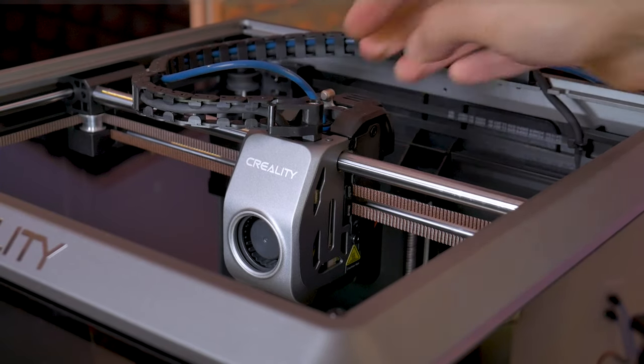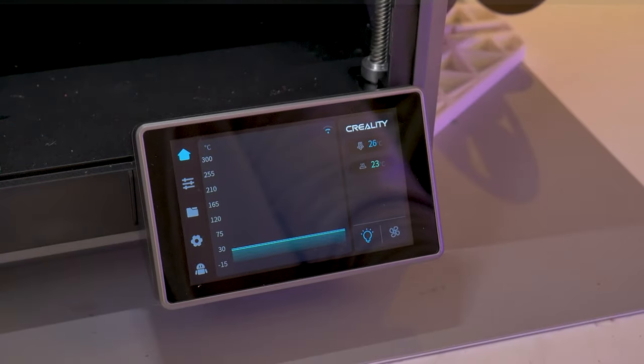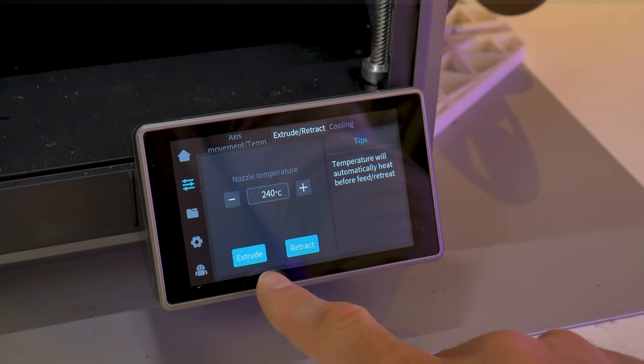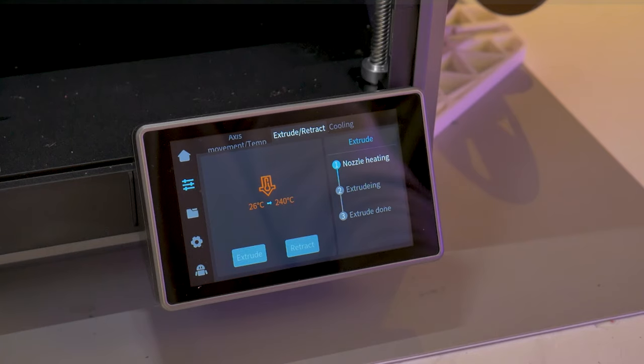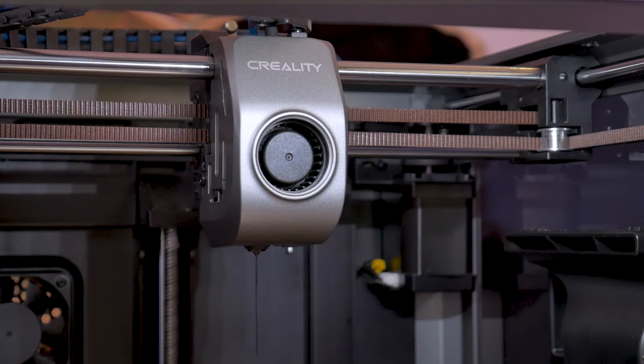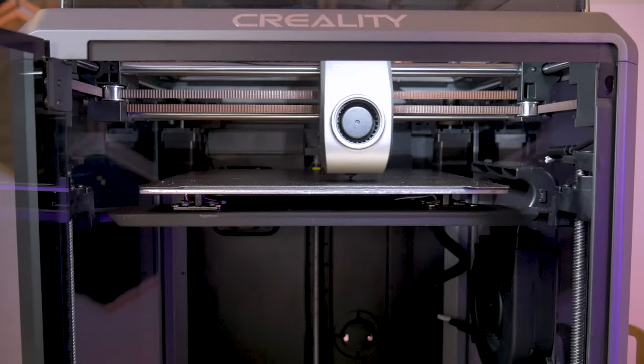From the touchscreen, we can go back into the controls menu, head up to extrude retract, and then press the extrude button. The nozzle will preheat and then the K1 will extrude an excessive amount of plastic in my opinion, but the nozzle will be thoroughly primed. And that's it. I was back to printing right away.